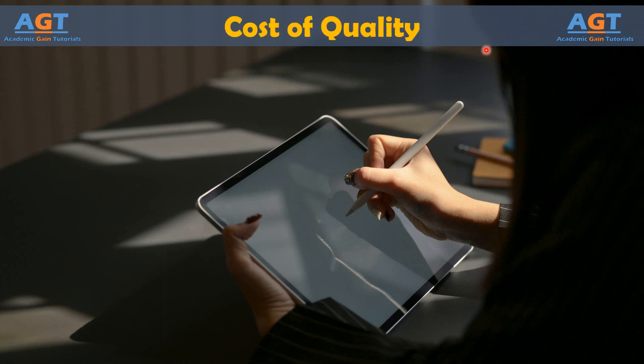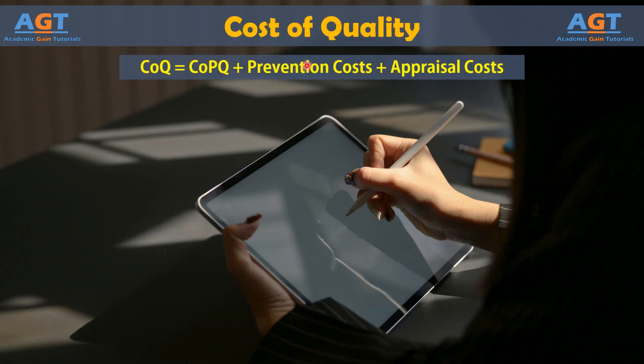The equation for calculating cost of quality is: COQ equals cost of poor quality, or COPQ, plus prevention costs, plus appraisal costs.